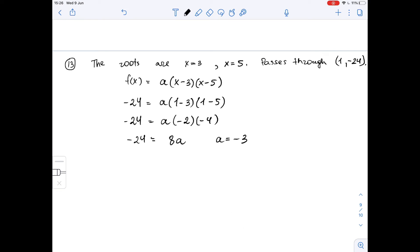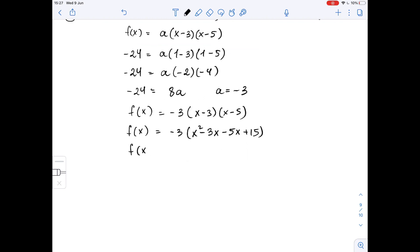Great, since we have found our a, we can write down that f of x is equal to negative 3 times (x minus 3)(x minus 5). Now let's write it in standard form. f of x is equal to negative 3 times (x squared minus 3x minus 5x plus 15), and this whole thing equals negative 3x squared plus 24x minus 45.